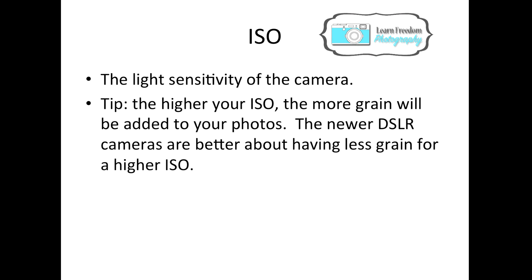ISO. Your ISO is the light sensitivity of the camera. Here's a tip: the higher your ISO is, the more grain that will be added to your photos. The newer DSLR cameras are better about having less grain at high ISO because they have more megapixels. However, it's just better to use your other settings to lighten your picture rather than completely rely on your ISO, because again it's going to add in that grain.